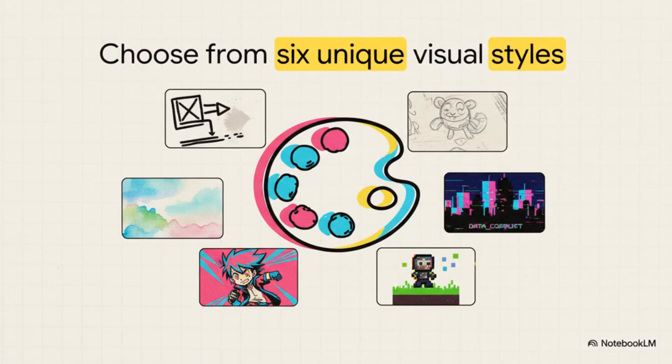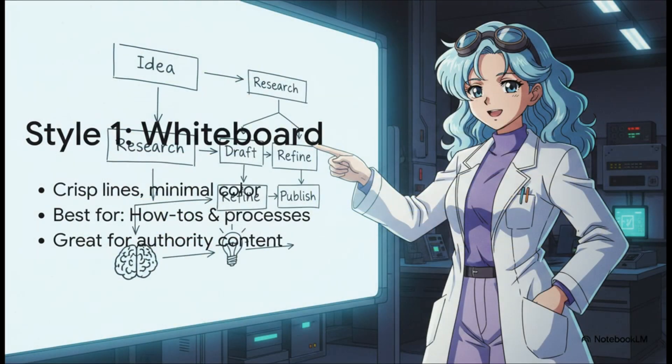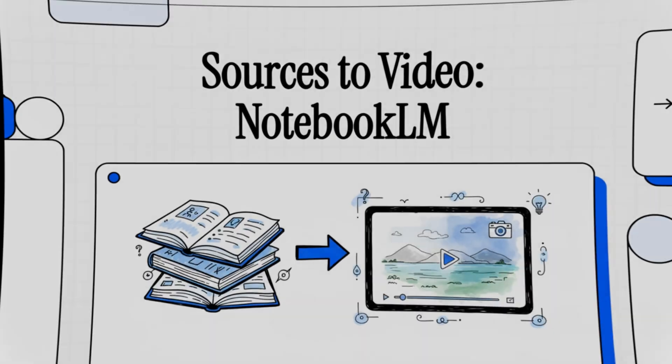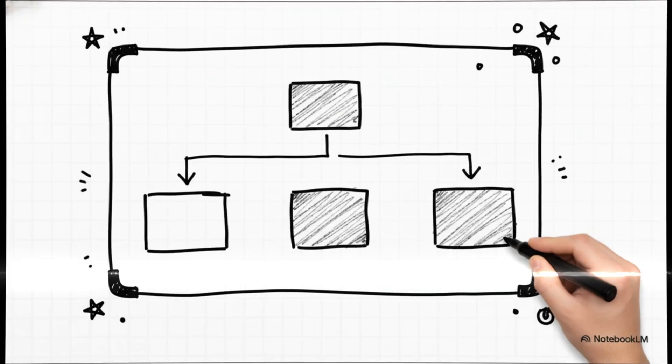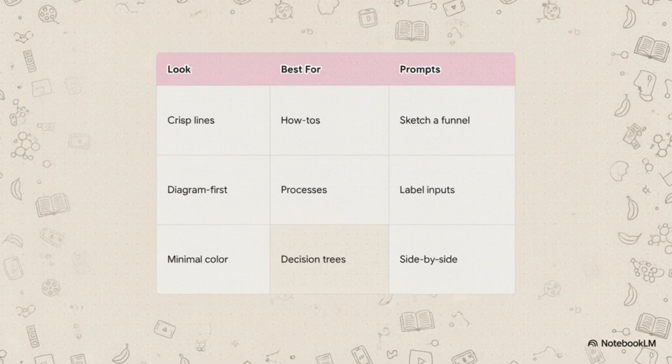Let's talk about finding your voice. There are six unique visual styles. First up is the whiteboard style — think of it for clean, clear teaching. It's perfect for explaining frameworks or processes, anything you need to make super clear.